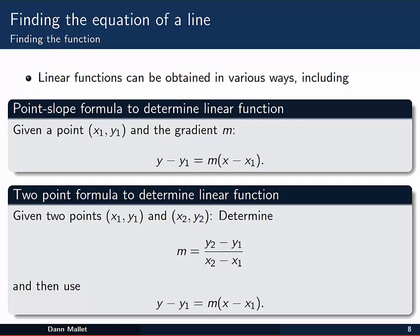So here's a little bit more on this, formalizing things. These linear functions can be obtained in various ways, and here's just two of them. Let's look at the second one first, because this is what we've done in the examples. When we're given two points, we first determine the slope of the line using the formula for m.